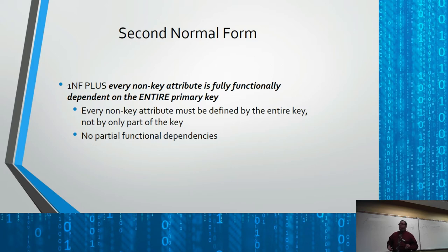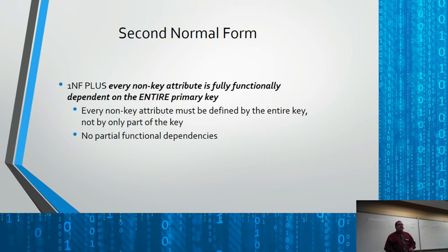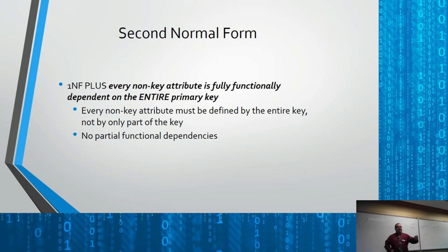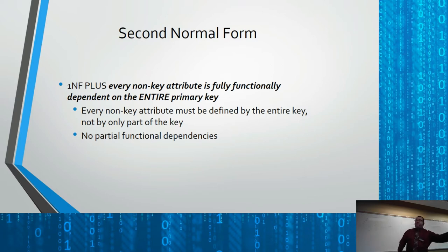Second normal form — and this applies to all normal forms — it's a bit like Dragon Ball Z: you can't become a Super Saiyan unless you're a Saiyan to start with. You can't go blue unless you're yellow. So to be in second normal form, you must already be in first normal form; otherwise you can never reach second normal form.